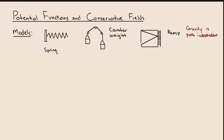We know from empirically testing things that the amount of energy stored by moving something against the force due to gravity depends only on the height of the object. If you walked up a ramp to the top of a tower, that would be the same amount of work as climbing a ladder. On the ramp you walk a greater distance but gravity's projection onto your direction of motion is small; on the ladder you go a shorter distance but each step requires more force.